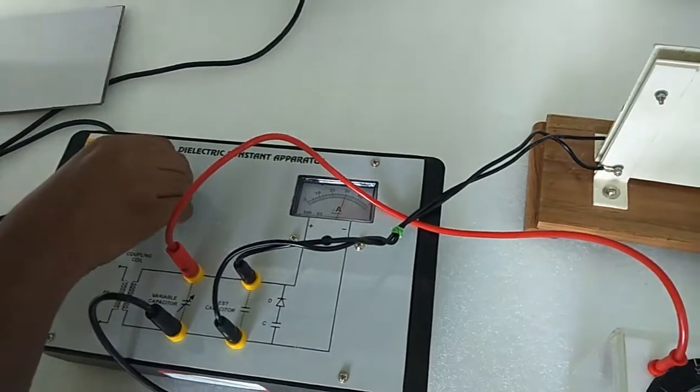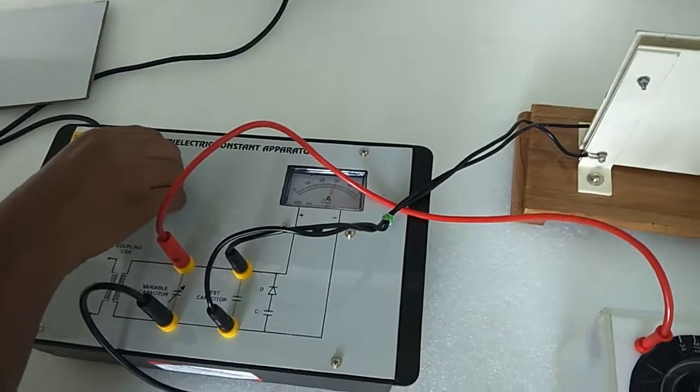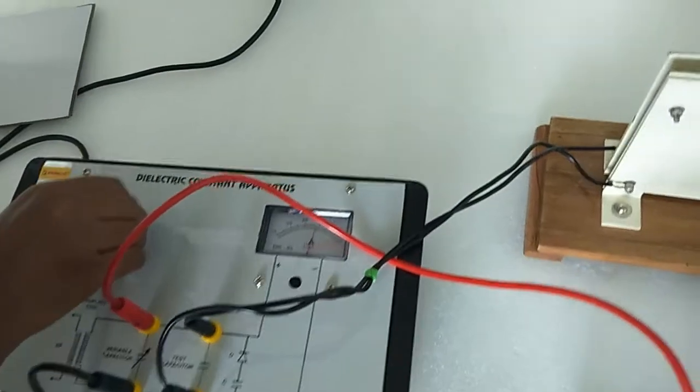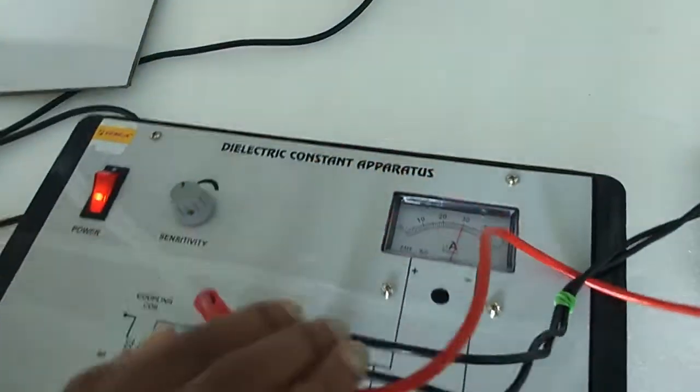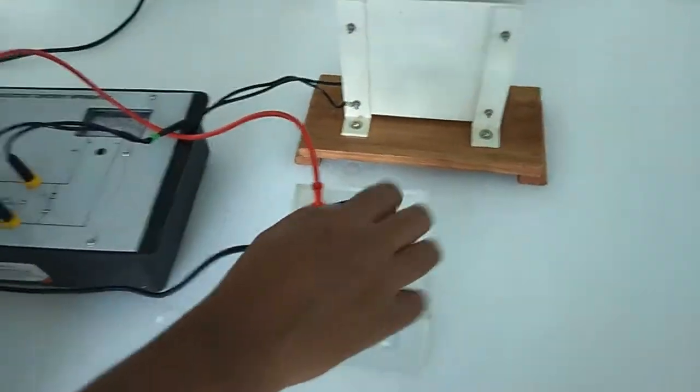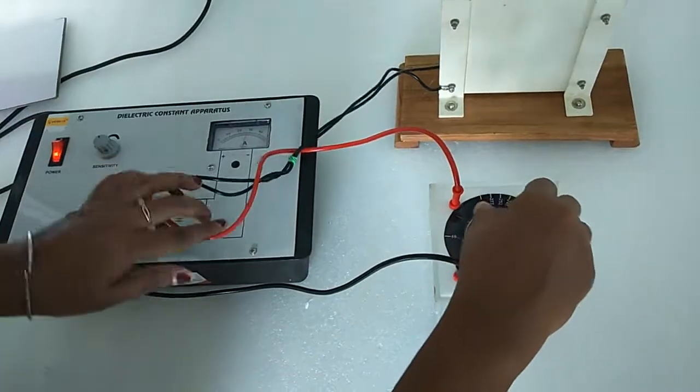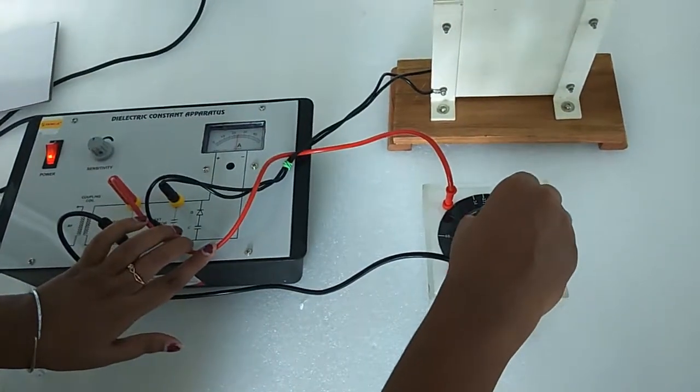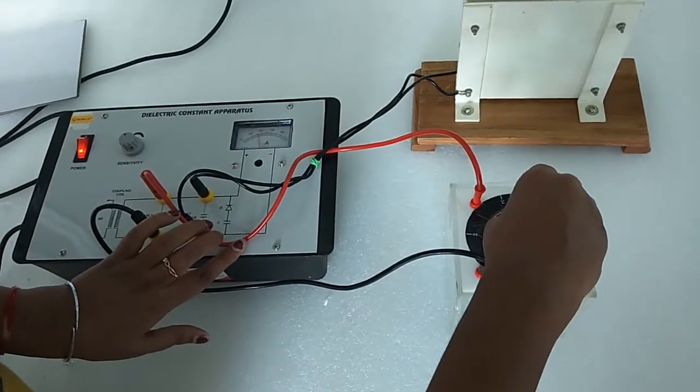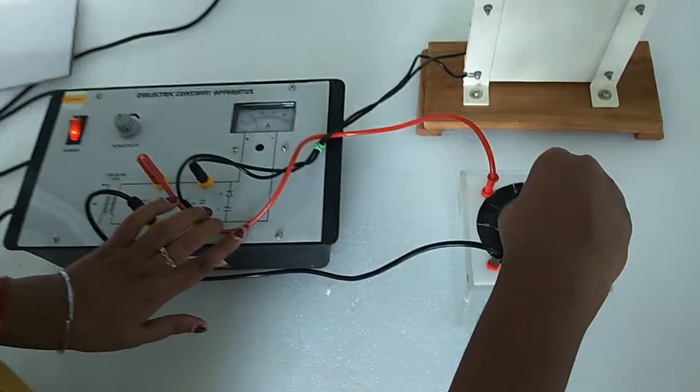With the help of this sensitivity knob, now after that vary this knob to increase the capacitor. We can see there is deflection in the ammeter. Keep varying till it reaches to the resonance point.